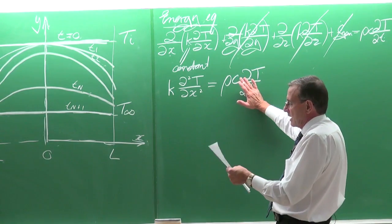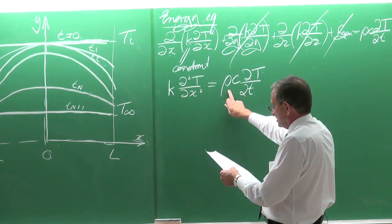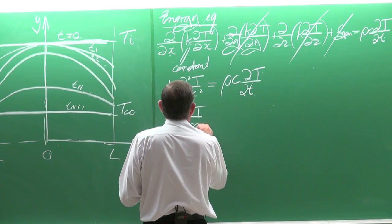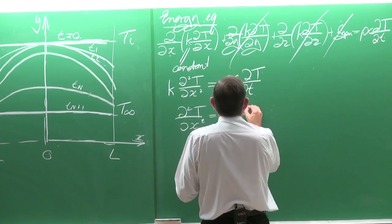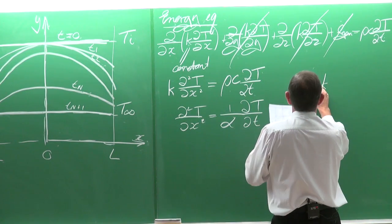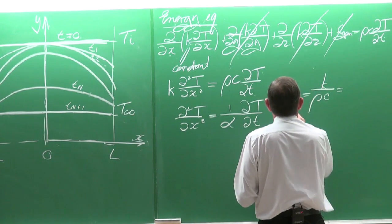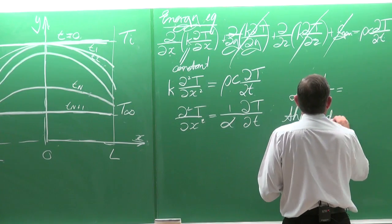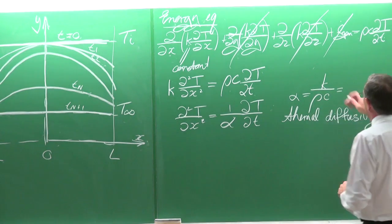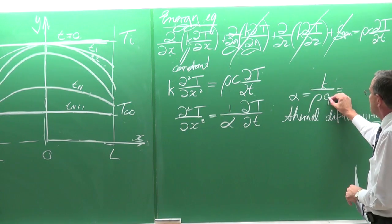The equation simplifies further. We can write ∂²T/∂x² = (1/α) times (∂T/∂t), where α = K/(ρC). That is called the thermal diffusivity — it groups together all the material constants. The C here is the Cp of the material.